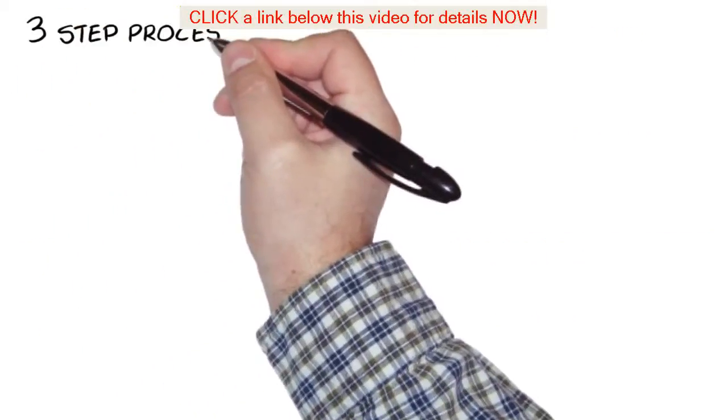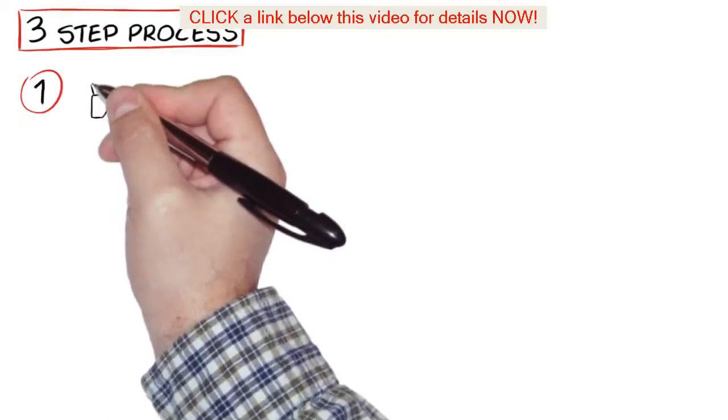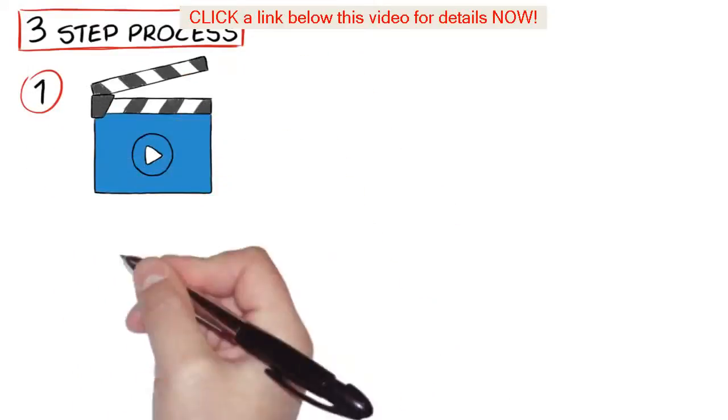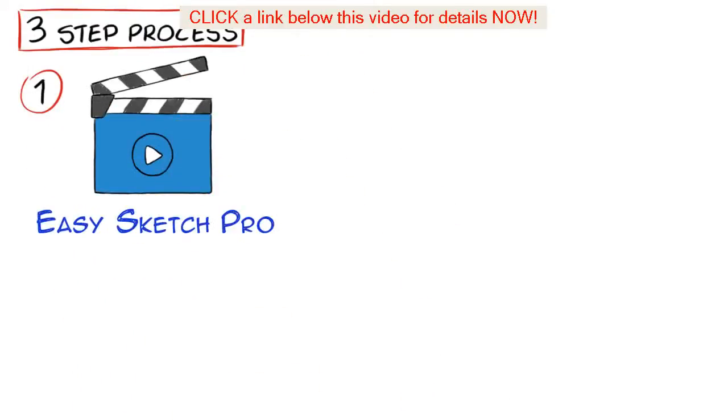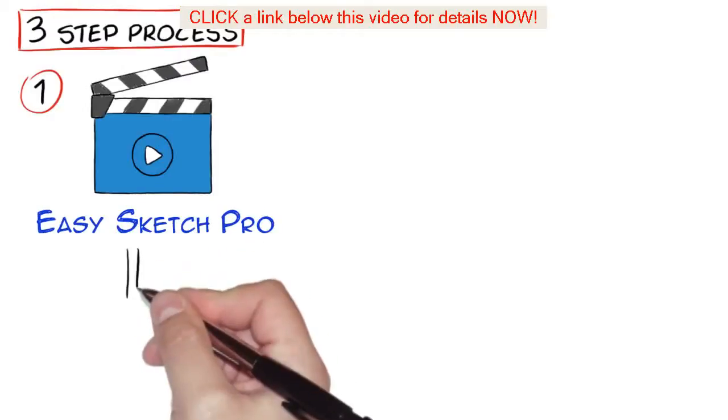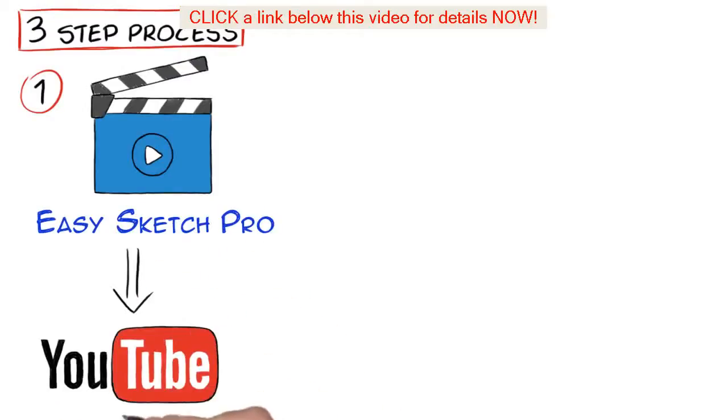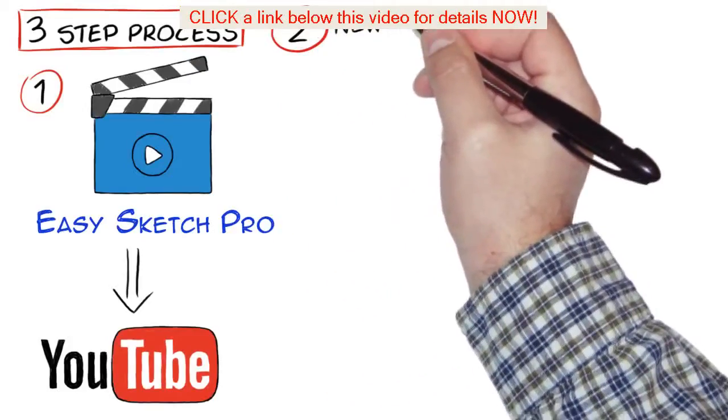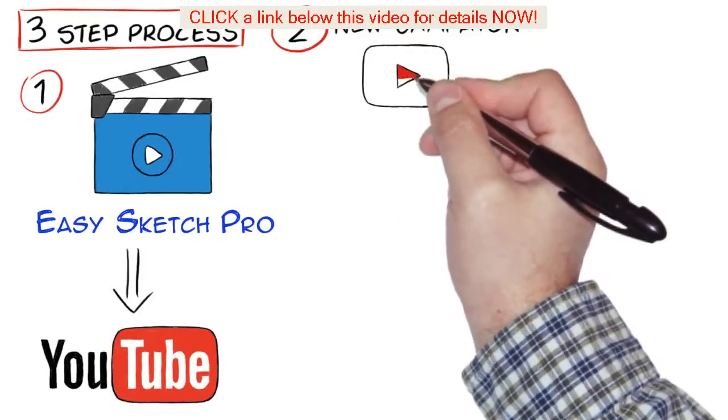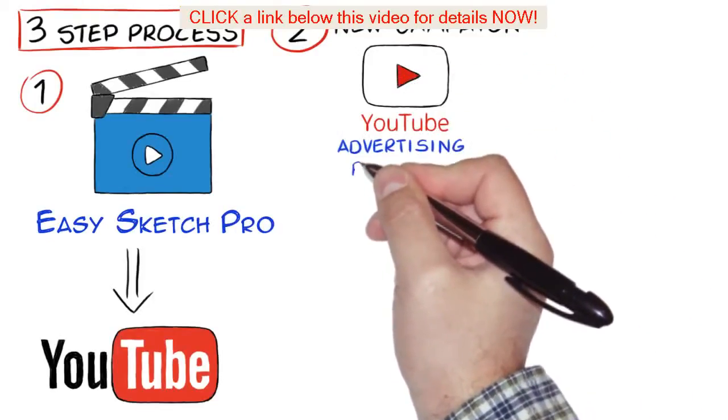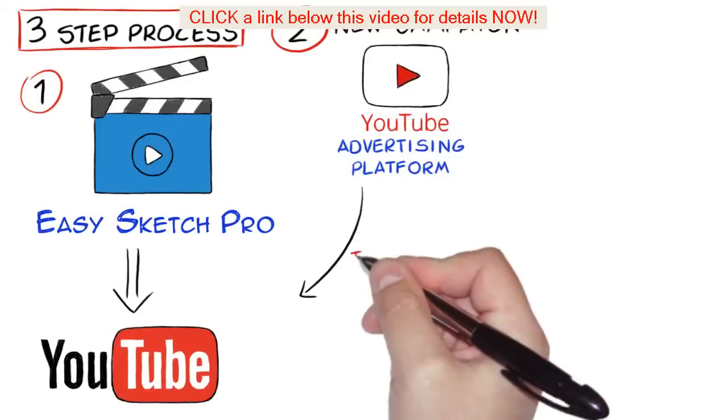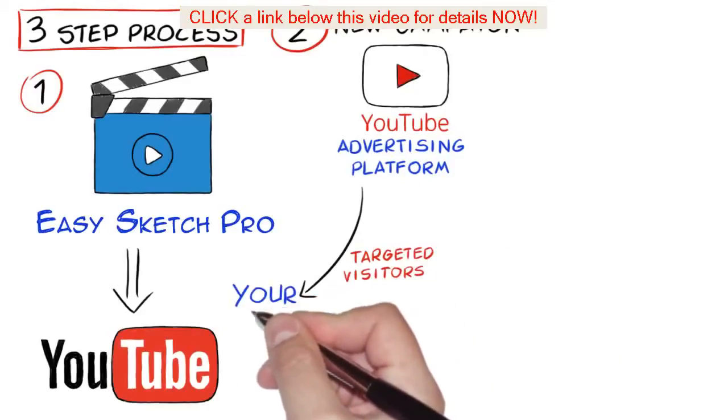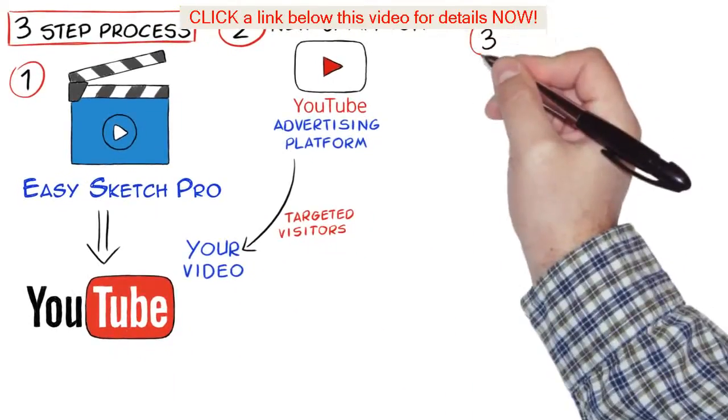It's a simple three-step process. One, just create an attention-holding video using EasySketch Pro or your favorite video software and upload it to YouTube with a link in the description and caption back to your website or your offer. Two, create a new campaign using YouTube video advertising platform and then super drive targeted visitors to your video on YouTube. And three...